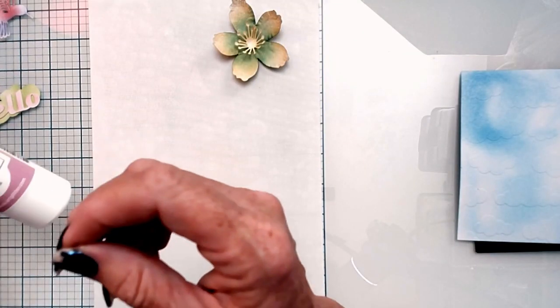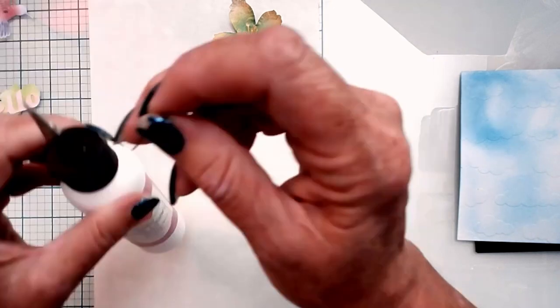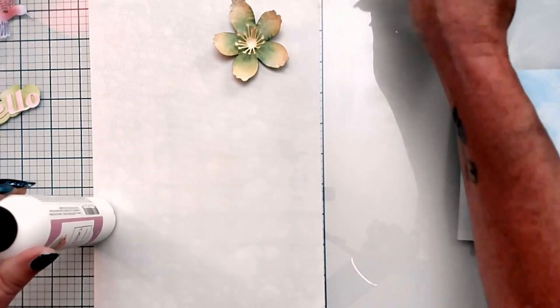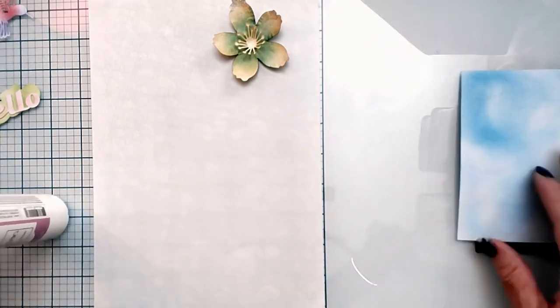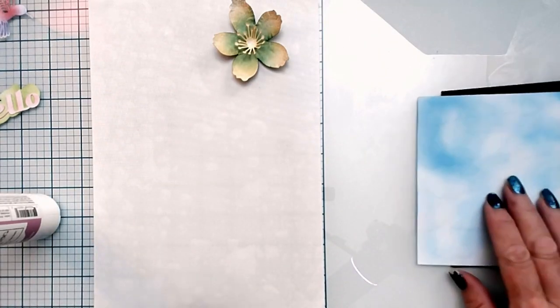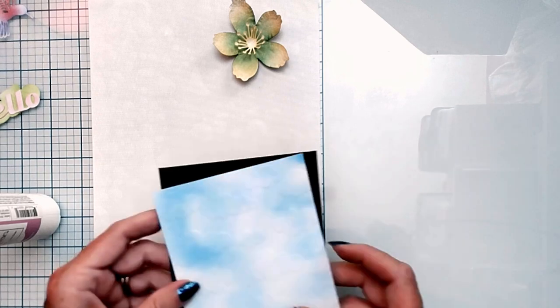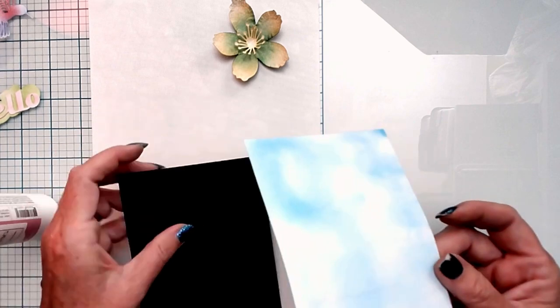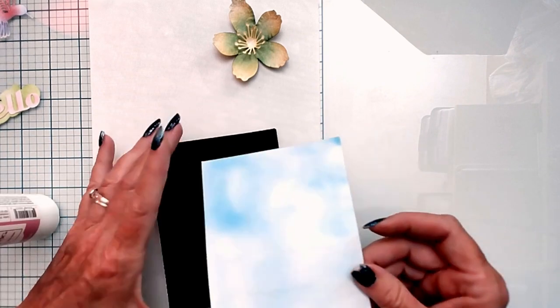Which one are you using? I'm using the Art Glitter Glue. That one sets pretty quick too. They fully cure in 24 hours. So we have our flower aside. Now we're going to add our topper to the card, as long as we have the card facing the right way, to the card base.